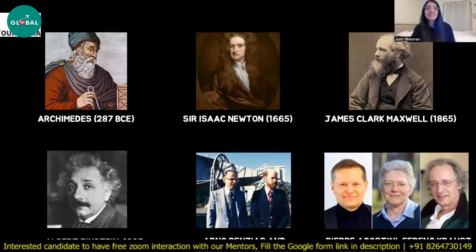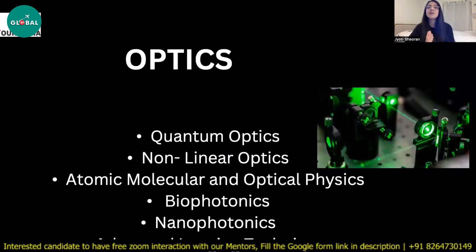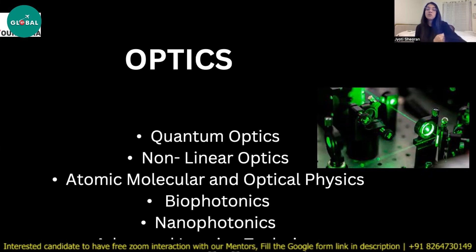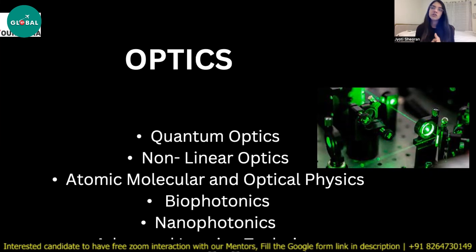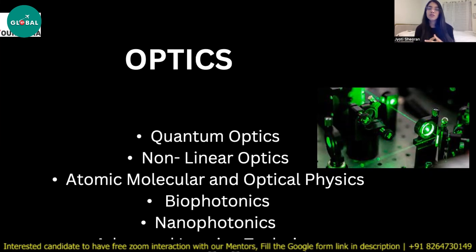Now let us discuss the areas in the field of optics where research is happening. Most of the Nobel Prizes in physics have been awarded in this area, so it is a very important field for research. All institutes in India in the physics department will have research in optics — for example, IIT Delhi has a Centre of Excellence for Optics — and in the US and Europe there are specialized institutes for optics research.